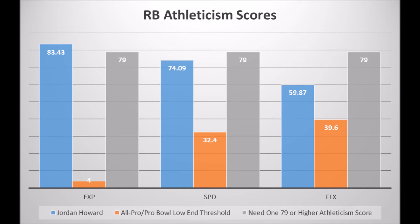There's no one-size-fits-all athleticism when it comes to the running back position, and I'm surprised more data people don't get this. You just need above-average athleticism in at least one trait. In Jordan Howard's case, his main athleticism trait that was above average was his explosion — he had an elite-level explosiveness trait, above-average speed, and at least above-average flexibility. When you look at Jordan Howard's athleticism traits together, he has the marks of a potential Pro Bowl running back.